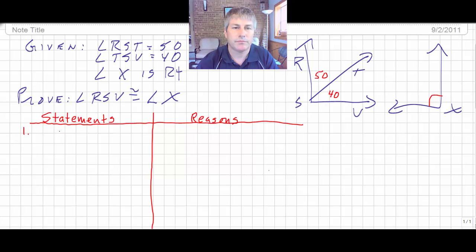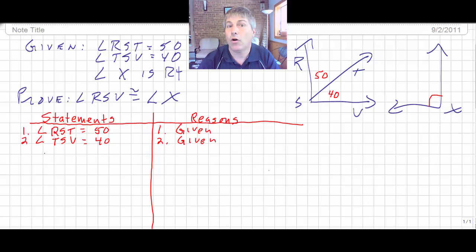So our first statement, angle RST equals 50 degrees. And how do we know that? Well, that was given. And notice I'm numbering my statements and my reasons. That's reason statement one. Statement two, angle TSV equals 40 degrees. And that is also given. Now, if you want, you can write all your givens down at once. A lot of guys like doing that. Sometimes I like to go ahead and if I already can deduce something, if I know something or if I come up with a conclusion based on one or two givens, I'll go ahead and do that.